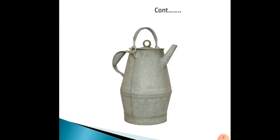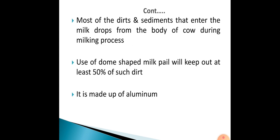Most dirt and sediment that enters the milk drops from the body of the cow during the milking process. Use of a dome-shaped milk pail made of aluminium will keep out at least 50% of such dirt due to its dome-shaped design.